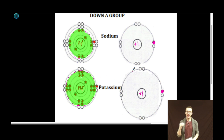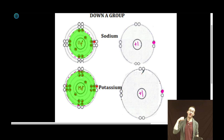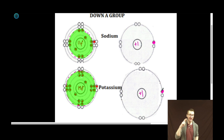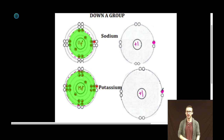Notice that within the same group, the core charges are going to be the same and the number of valence electrons will be the same. However, for sodium the valence level is the third level, and for potassium it's the fourth. So the radius of potassium is larger than the radius of sodium. CVR.